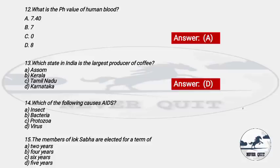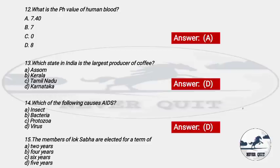Question 14: Which of the following causes AIDS (Acquired Immunodeficiency Syndrome)? Options: A) Insect, B) Bacteria, C) Protozoa, D) Virus. The right answer is option D — Virus. AIDS is caused by the HIV virus.